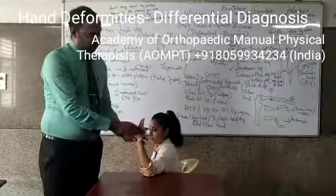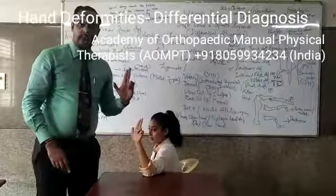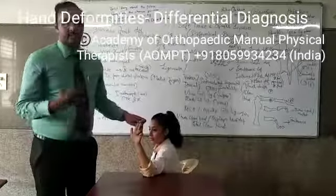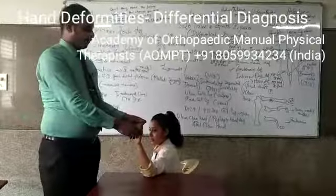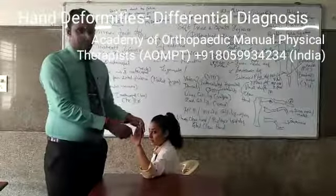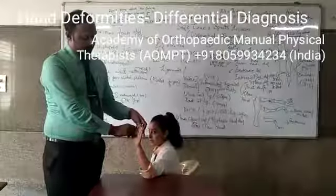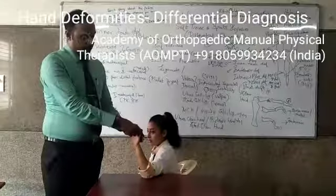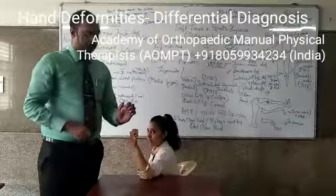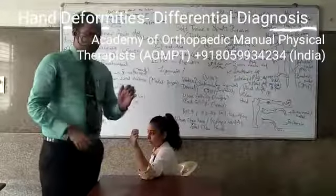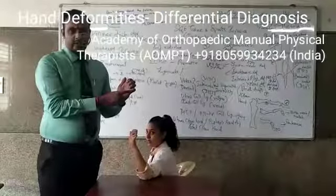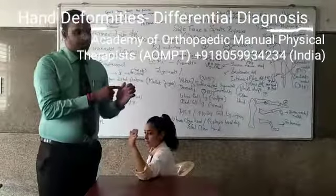This medial-side claw hand is called the ulnar claw hand, also called the bishop's hand deformity — it is the position of the hand of a bishop or priest in church. If you see a deformity in the thumb as well as a total claw hand together, then you can suspect median nerve injury plus ulnar nerve injury, because of the total claw hand and ape thumb.